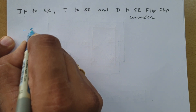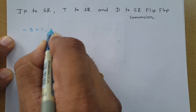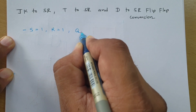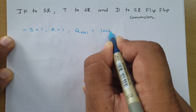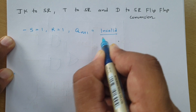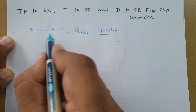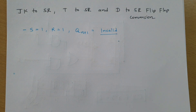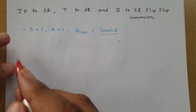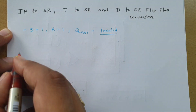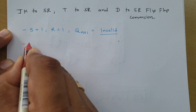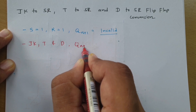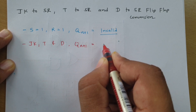When we talk about SR flip-flop, if S=1 and R=1, the output state goes into an invalid state. So when S=1 and R=1, the output is invalid. But if you observe JK, T, and D flip-flops, their output state will never go into an invalid state.